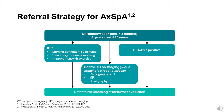The ASAS referral parameters include: inflammatory back pain; HLA-B27 positivity; imaging evidence of sacroiliitis; peripheral manifestations such as arthritis, enthesitis, or dactylitis; extra-articular manifestations such as psoriasis, inflammatory bowel disease, and/or uveitis; family history of axial spondyloarthritis; good response to NSAIDs; or elevated acute phase reactants.